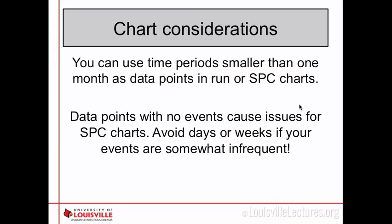One important consideration: for rates, your lower control limit is often going to be zero, since you can't have less than zero percent as a rate. If you have several data points with zero infections — say you're tracking by week and have several weeks with no infections — that could cause issues with how you read an SPC chart, so you might want to combine data into months or longer periods.